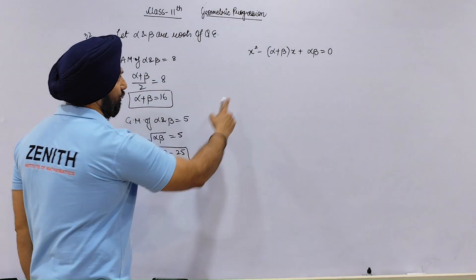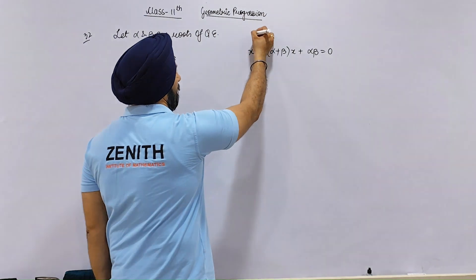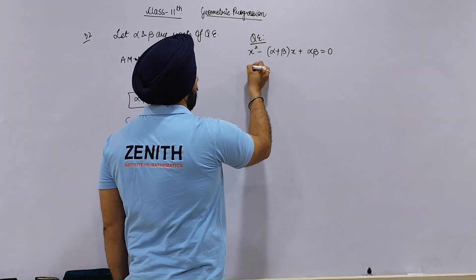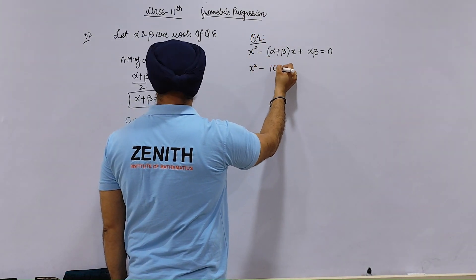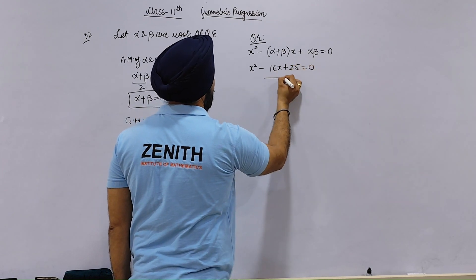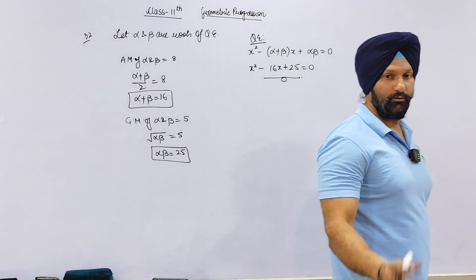Are you ready? I will do this. So my quadratic equation will be x squared minus 16x plus 25 equals to 0. That's my answer. Do it.